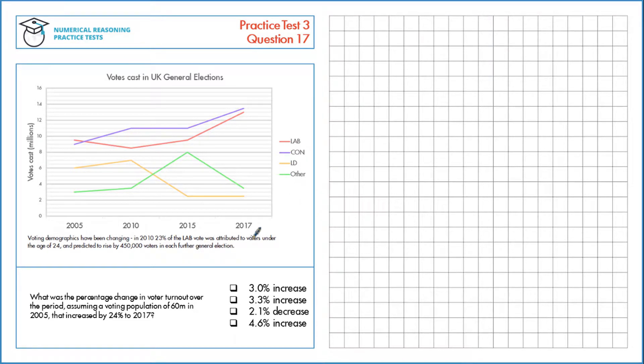What was the percentage change in voter turnout over the period, assuming that a voting population of 60 million in 2005 increased by 24% to 2017?